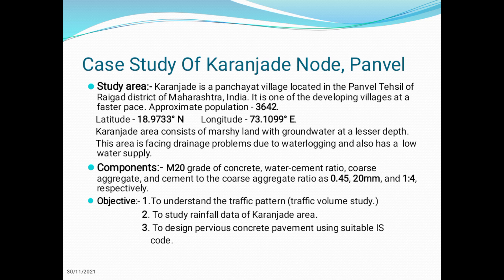This is the case study of Karanjade node, Panvel. Karanjade is a panchayat village located in the Panvel Tehsil of Raigad district of Maharashtra, India. It is one of the villages developing at a faster pace. Its approximate population is 3,642. Its latitude is 18.9733 degrees north and longitude is 73.1099 degrees east. Karanjade area consists of marshy land with groundwater at a lesser depth. This area faces drainage problems due to water logging and has a low water supply.